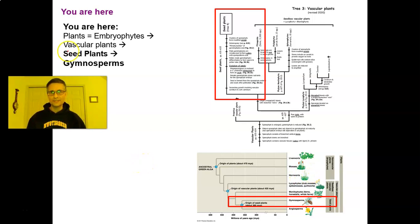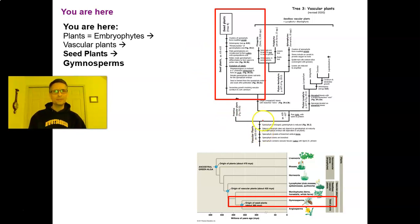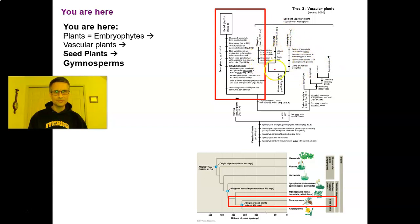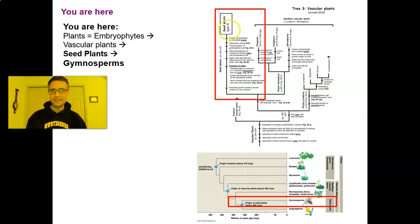Our second group of plants were the vascular plants. We talked about the seedless vascular plants — the lycophytes and the monilophytes. But our third major group of vascular plants are the seed plants, and today we're going to start looking at seed plants — specifically gymnosperms.